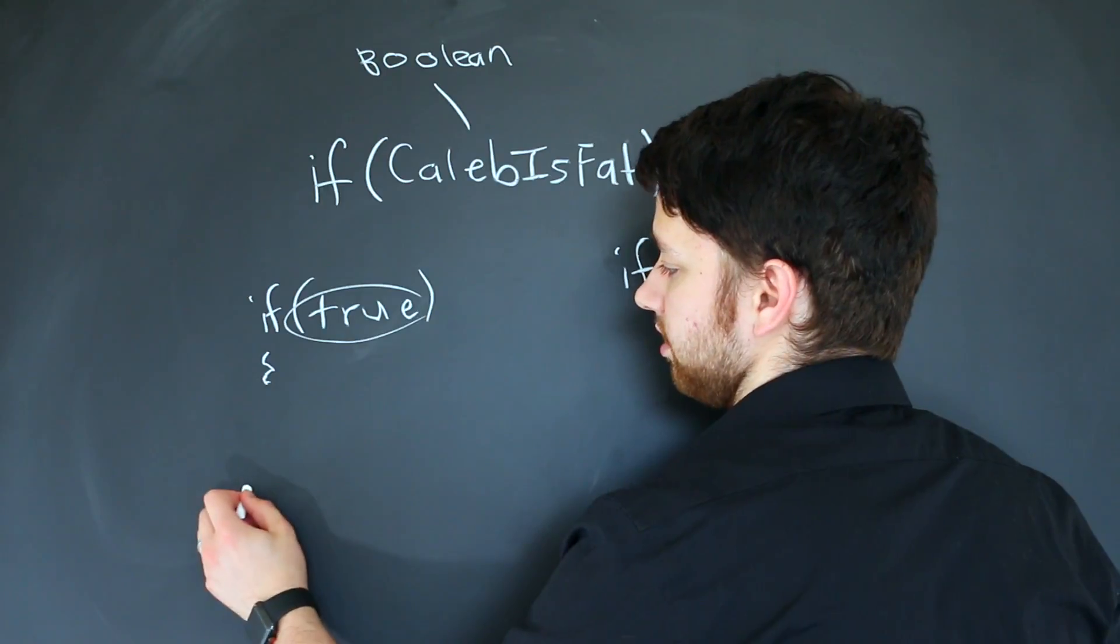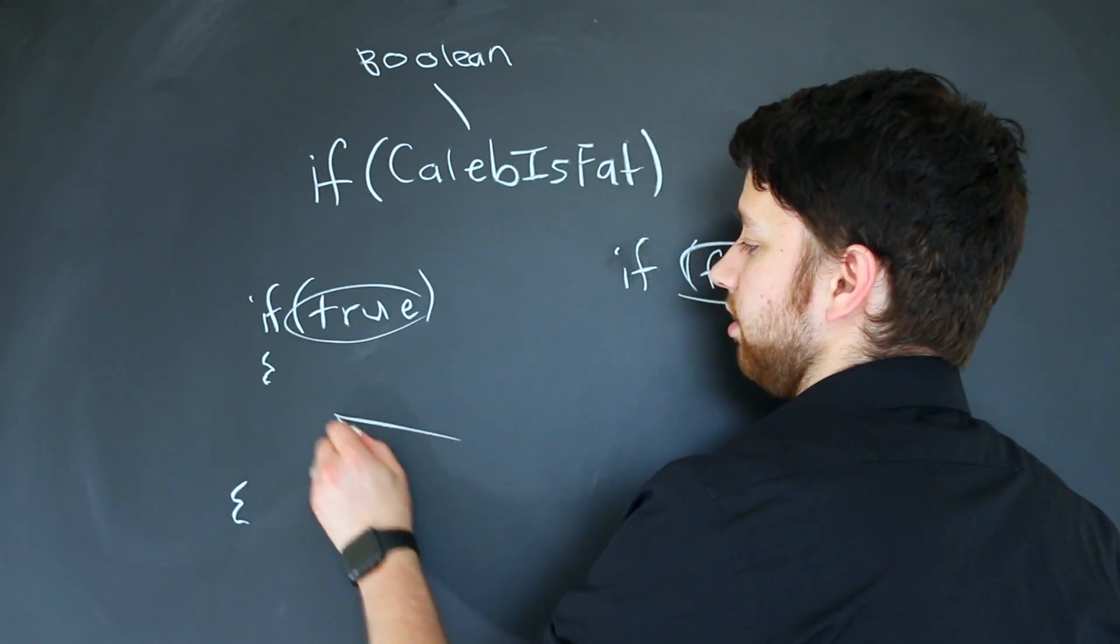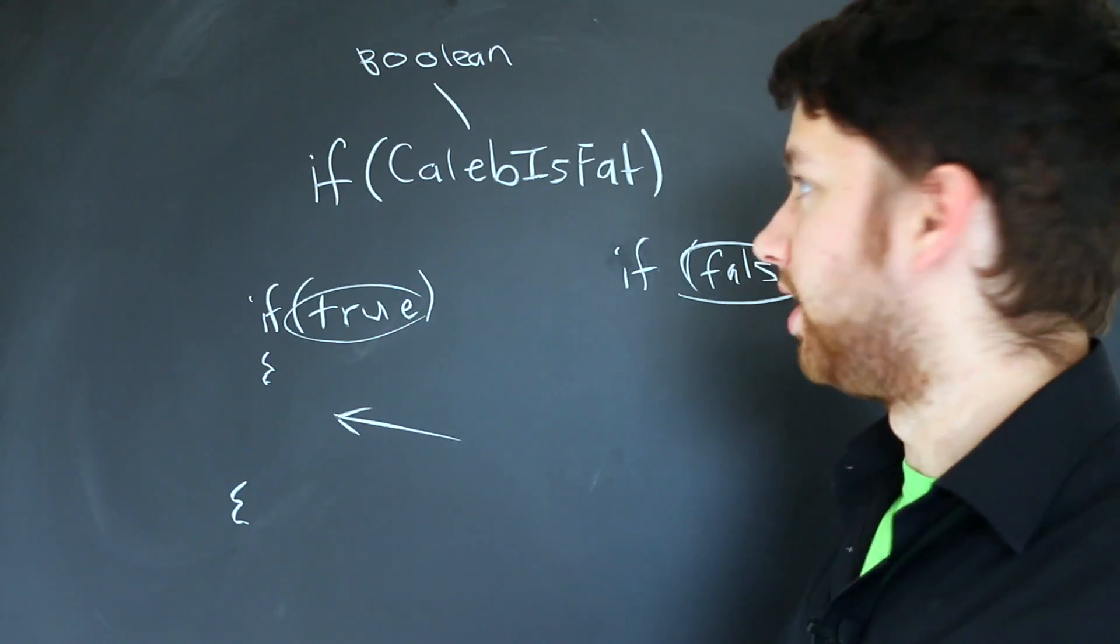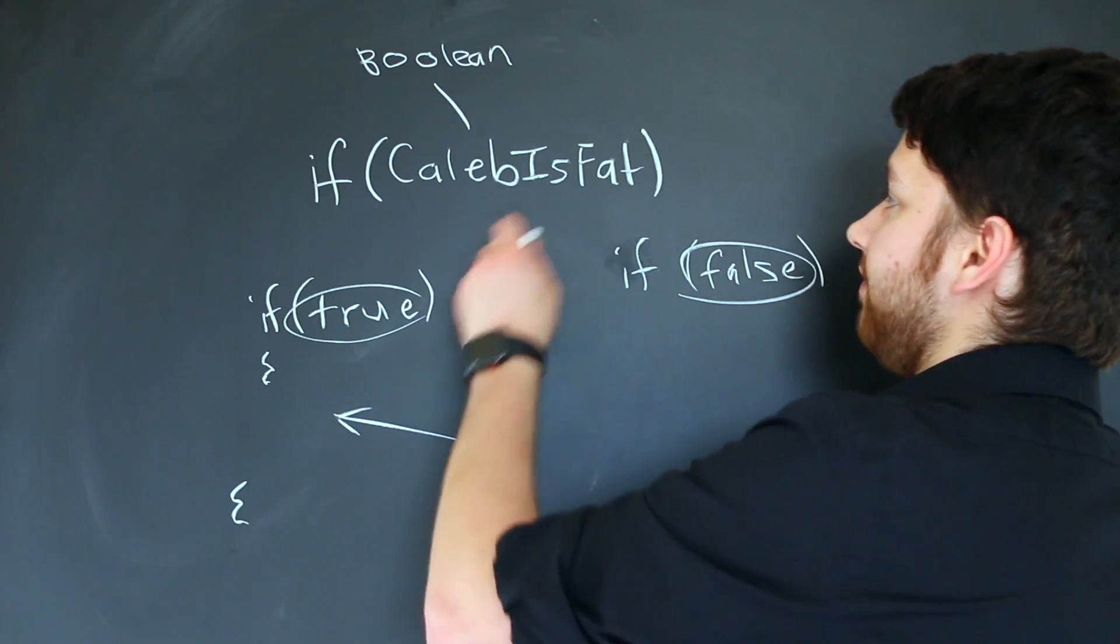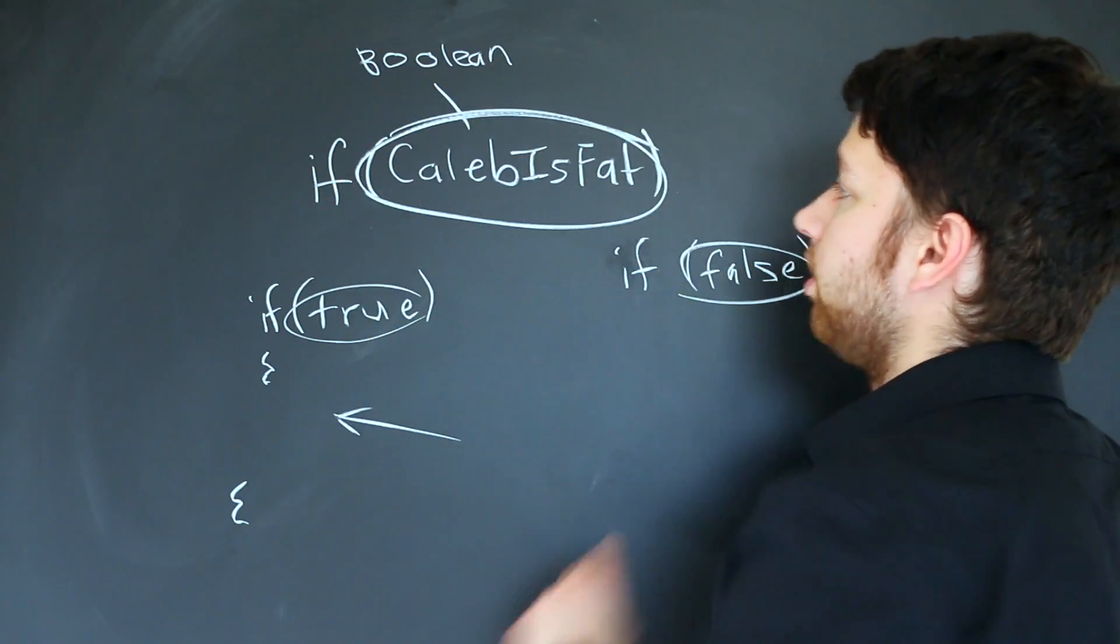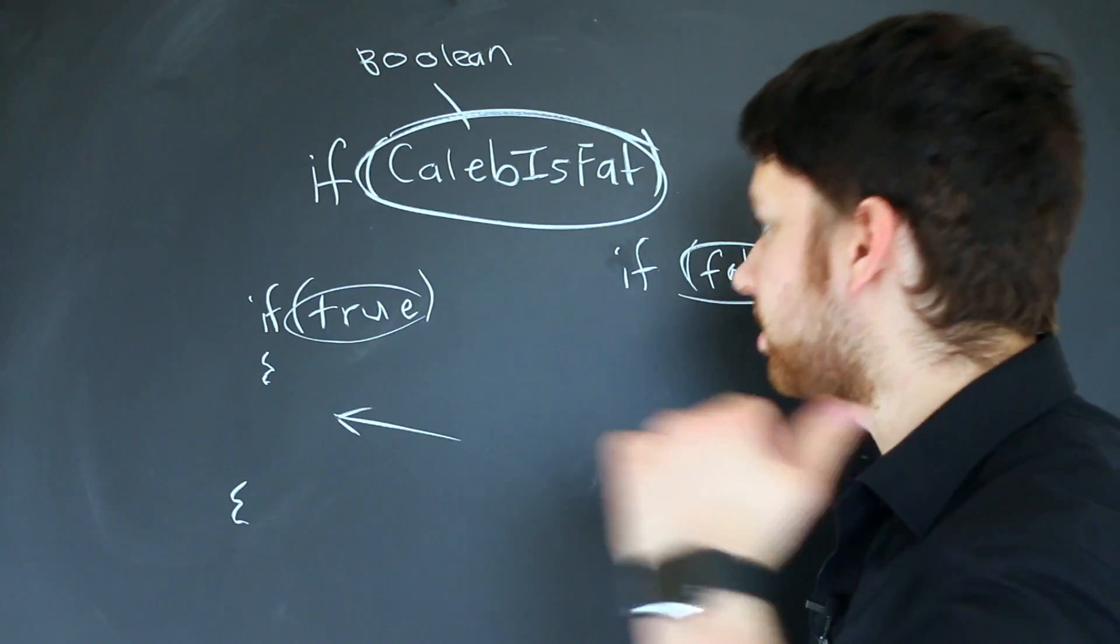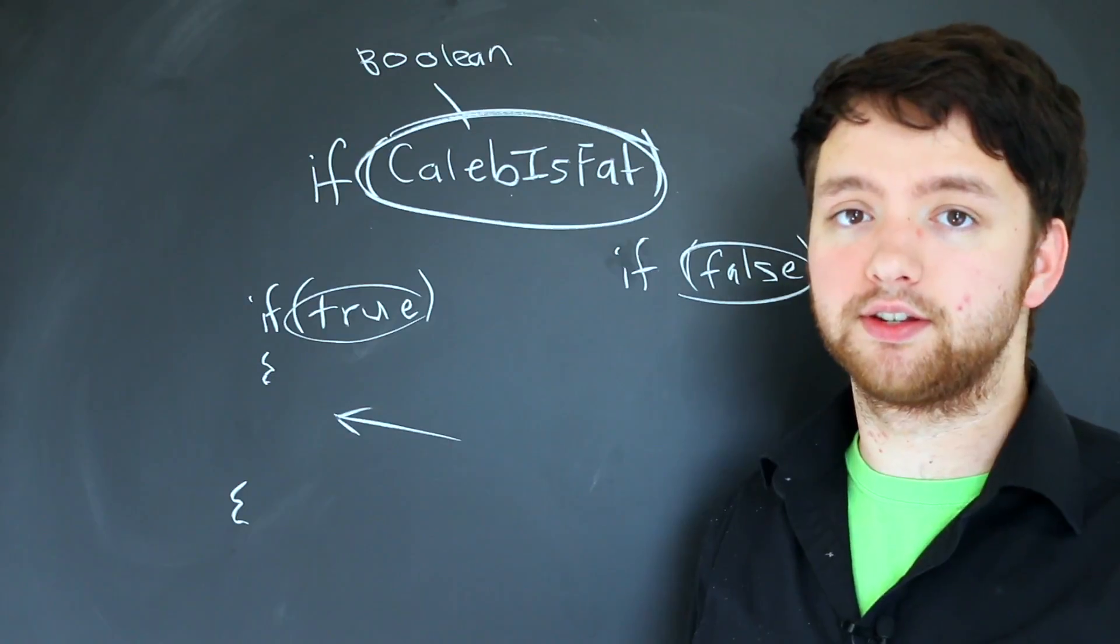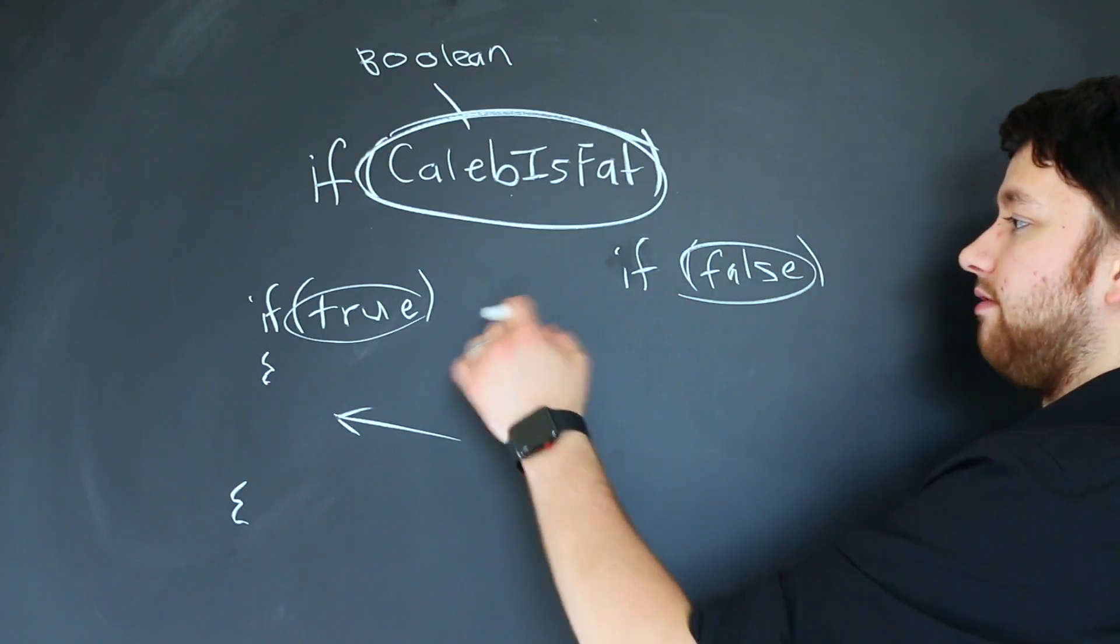So the key takeaway from this, and this will come in handy, is that if you have a boolean variable, you do not have to do anything except put the name of the variable in those parentheses. That is enough to have it evaluate to true or false.